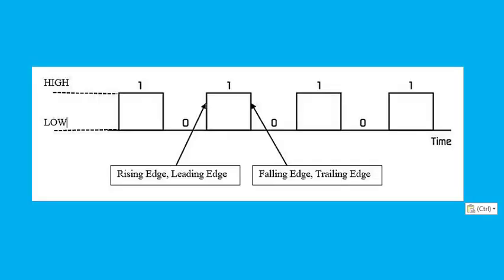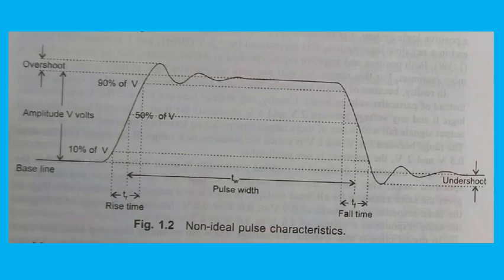A non-ideal pulse has finite rise and fall times. The time taken by the pulse to rise from low to high is called the rise time, and the time taken by the pulse to go from high to low is called the fall time.